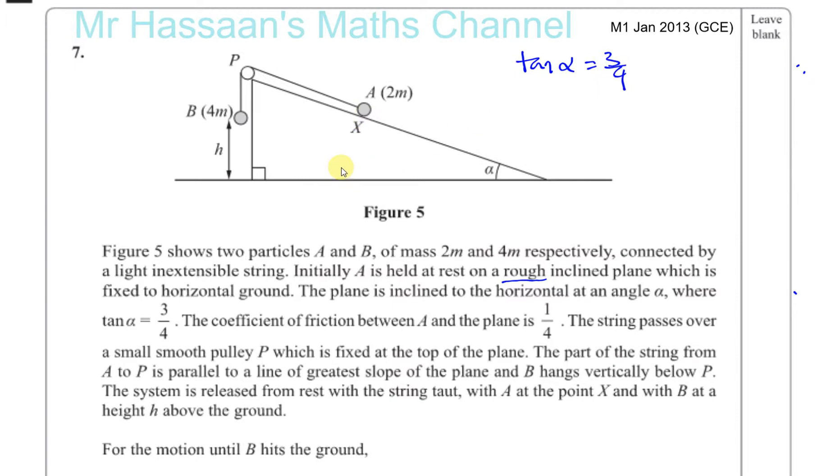The tangent of alpha is equal to 3 quarters. That will help us in finding resolving forces for particle A. The coefficient of friction between A and the plane is a quarter. That's going to help us when we're dealing with the friction. The string passes over a small smooth pulley, so there's no friction in the pulley, which is fixed at the top of the plane. The part of the string from A to P is parallel to a line of greatest slope of the plane and B hangs vertically below P. So it's like a two-dimensional diagram.